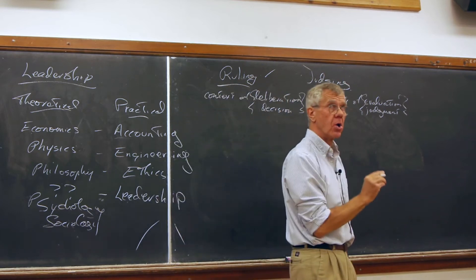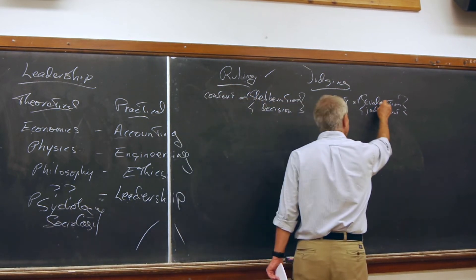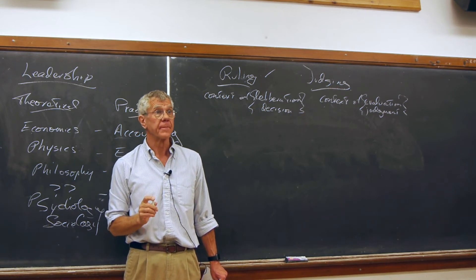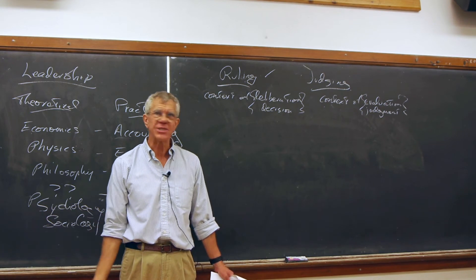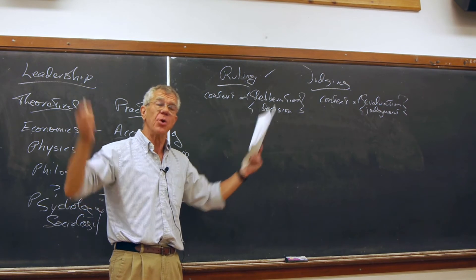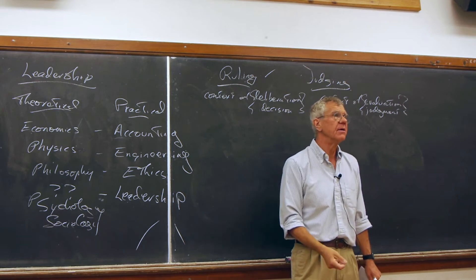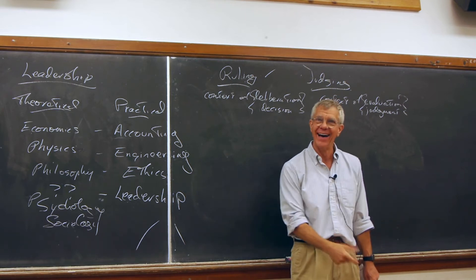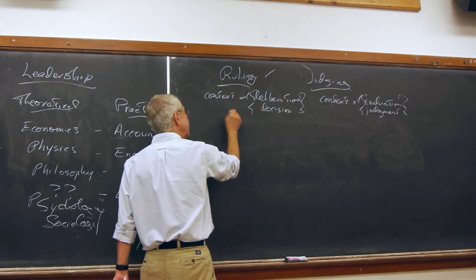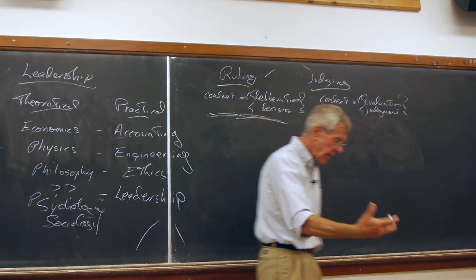That seems to me crucial that we have those two things in mind. Now, the question is, where does leadership belong? Is the leader someone who rules, someone who deliberates and decides? Is the leader someone who, after the fact, evaluates and judges? They decide, right? They rule. The leader is the one who does that. This is really where leadership belongs. It's a matter of that context of deliberation, context of decision. It's a question of ruling.